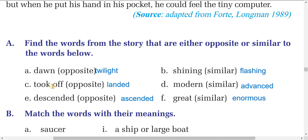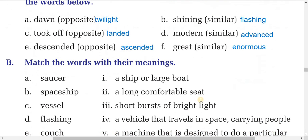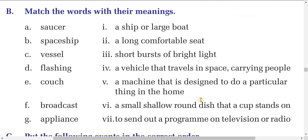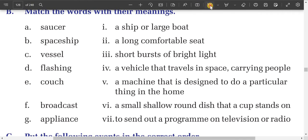Next: took off — you know, the plane took off, went off — so the opposite word is landed. Modern — the similar word for modern is advanced. Descended — the opposite word of descended is ascended. And great — the similar word is enormous.